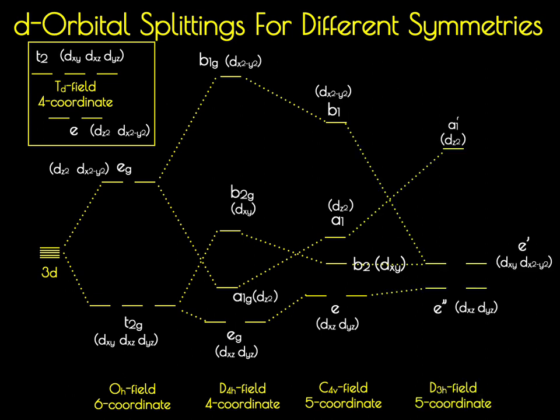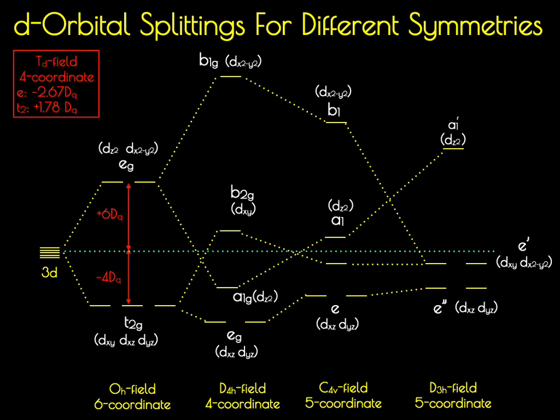Going to D3h symmetry, the dz² orbital is now the highest in energy — the most destabilized — because there are two interactions directly pointed along the dz² orbital. Both the dxy and dx²-y² form one degenerate set, and the dxz and dyz form another degenerate set: the e′ and e″ orbitals. These have energies fairly close to one another, with the dxy and dx²-y² being slightly higher in energy than the dxz and dyz. The energy of all orbitals is conserved about the barycenter.